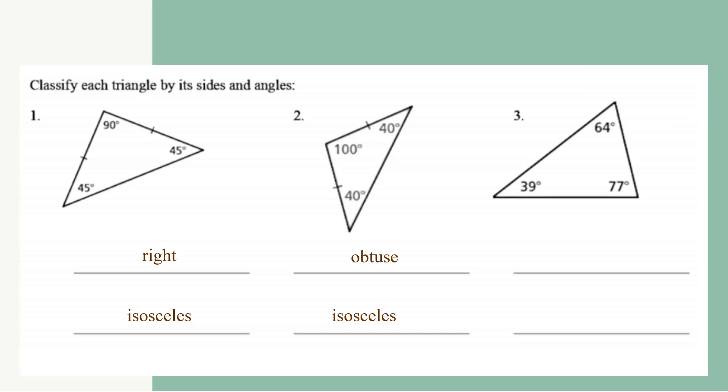On number three, you can see that we have no angles that are congruent, and no sides that are congruent. You can also see that we have no angles larger than 90, and no angles equal to 90. So all of these angles are less than 90 degrees, which means they are all acute angles, and because none of the sides are equal to each other, it is a scalene triangle.